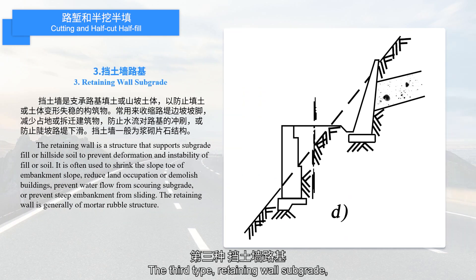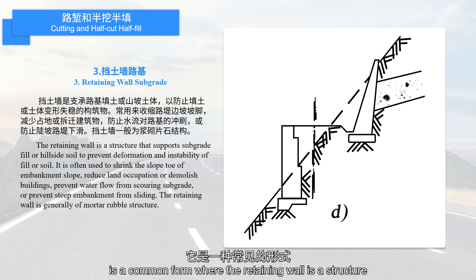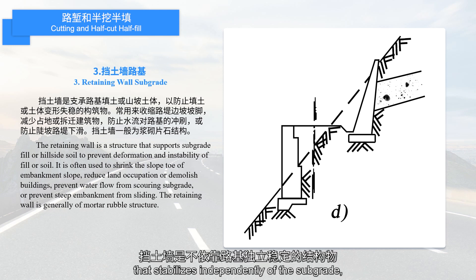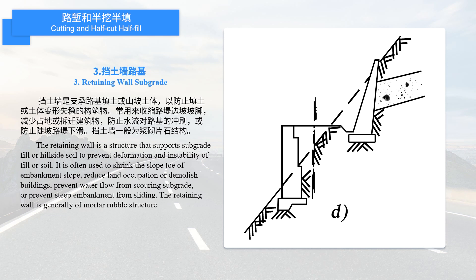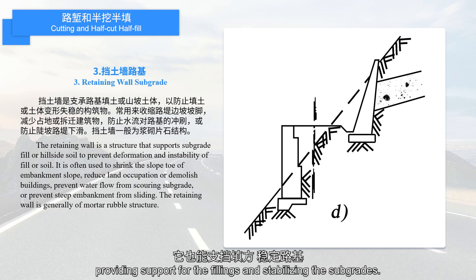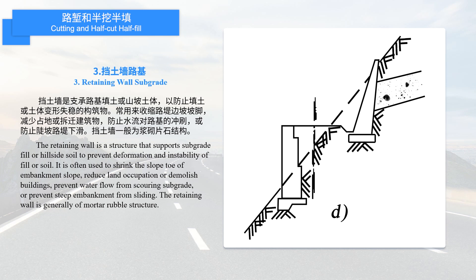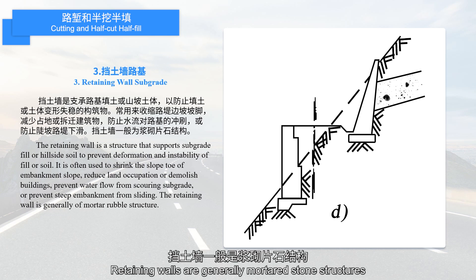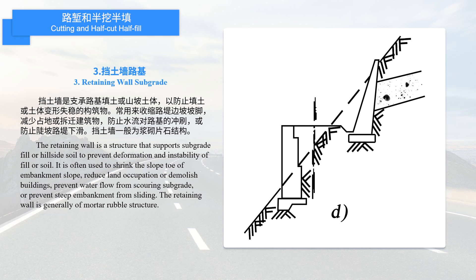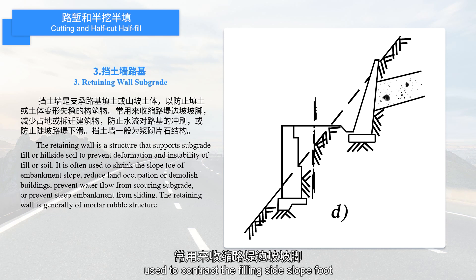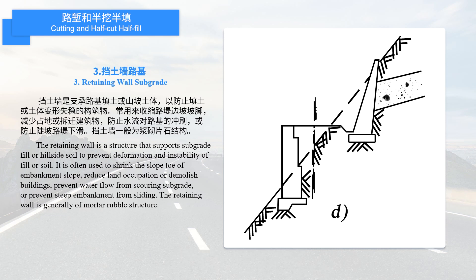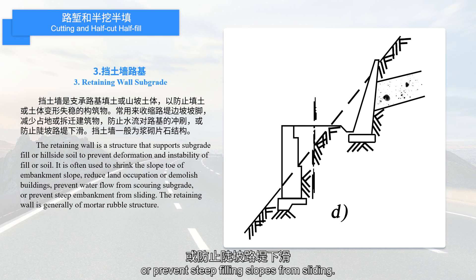The third type is retaining wall subgrade, a common form where the retaining wall is a structure that stabilizes independently of the subgrade, providing support for the fillings and stabilizing the subgrade. Retaining walls are generally mortared stone structures used to contract the filling side slope foot to reduce land occupation or demolition, prevent water erosion, or prevent steep filling slopes from sliding.